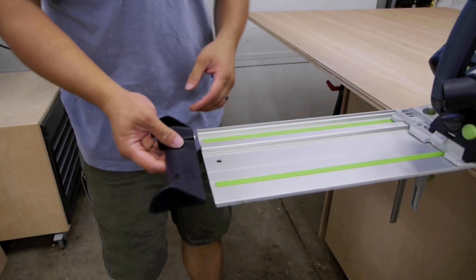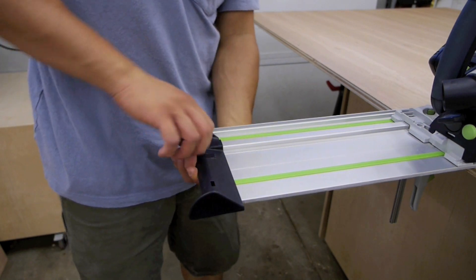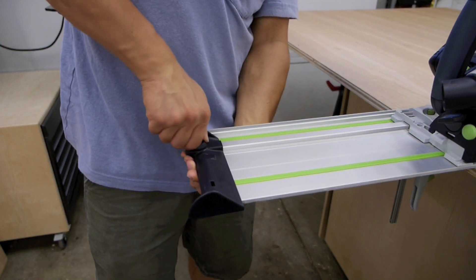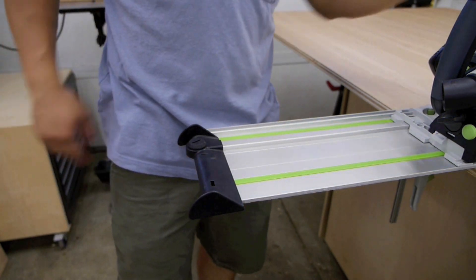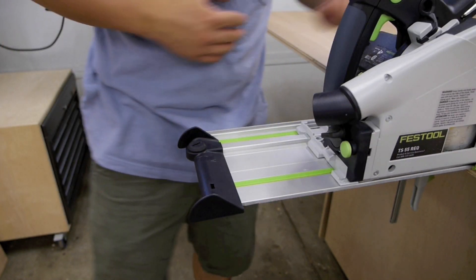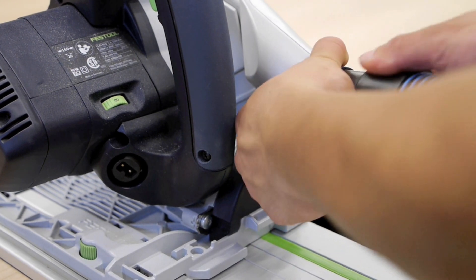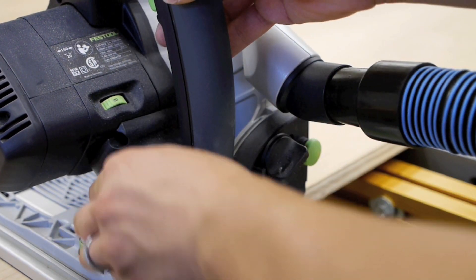I'm going to attach the hose and cord deflector so this will help the cord and the hose slide smoothly as I slide the saw down the rail. Attach the hose and the plug-it cord to the saw.